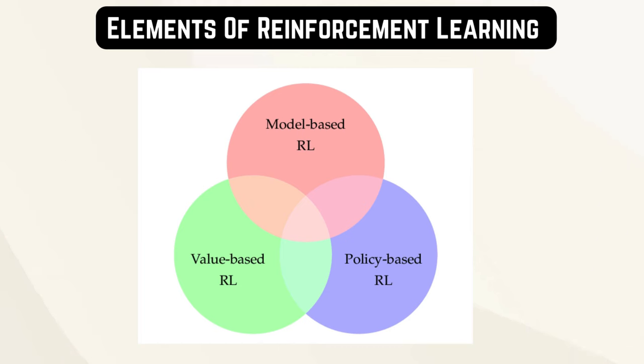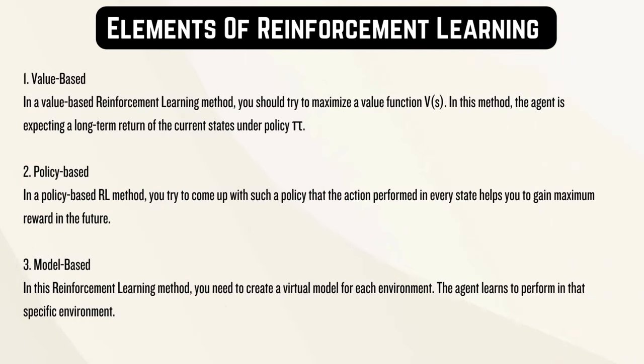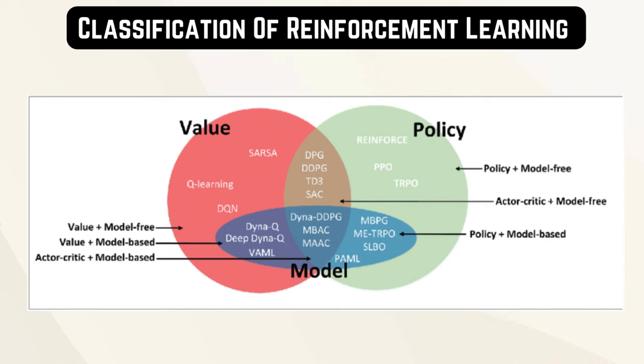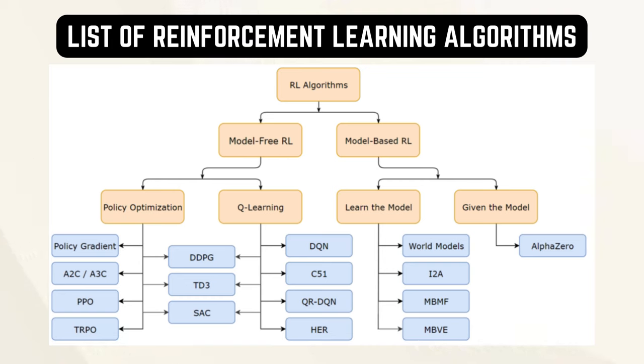The three elements of reinforcement learning are model-based learning, value-based learning, and policy-based learning. Model-based learning: in this reinforcement learning method, you need to create a virtual model for each environment. The agent learns to perform in that specific environment. Value-based learning: in a value-based reinforcement learning method, you should try to maximize a value function V(S). In this method, the agent is expecting a long-term return of the current states under policy pi. Policy-based learning: in a policy-based RL method, you try to come up with such a policy that the action performed in every state helps you to gain maximum reward in the future.